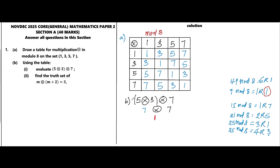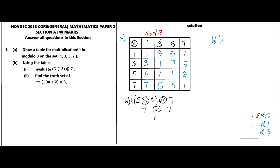Now for part b(ii): we need to find the true set of m×(m+2)=3 in mod 8, using the set {1, 3, 5, 7}. We use substitution. Testing m=1: we compute 1×(1+2). Inside the bracket, 1+2=3 (normal addition). Then 1×3 in mod 8, from the table, is 3. Since 3=3, m=1 satisfies the equation.